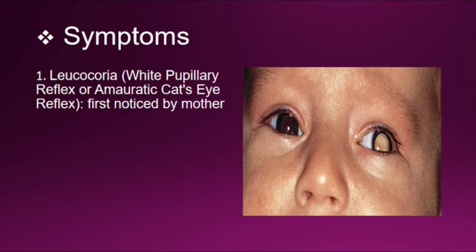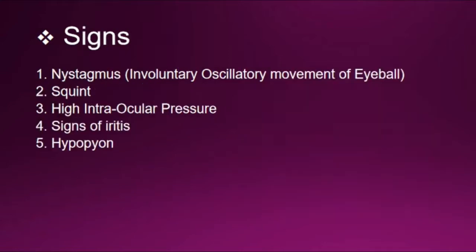The main symptom is leukochoria, which means white pupillary reflex, also called amaurotic cat's eye reflex. This is first noticed by the mother. You can see in the picture that the pupil has become white.